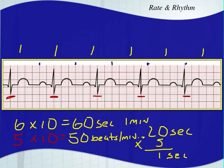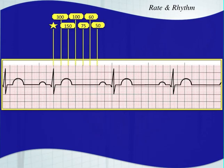That's a rough estimate and only works with a six-second strip. There are other ways to quickly identify the rhythm. If you have a patient with a very regular rhythm, you can use the 300 rule. It can't be a very slow rhythm — 50 beats per minute isn't a great example. This method is much more accurate. You start on a QRS complex that's on one of these bold lines.